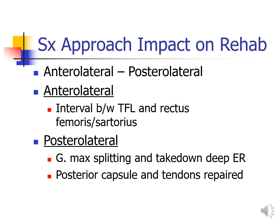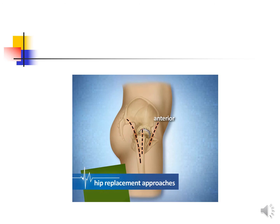With the posterolateral approach, after splitting the gluteus maximus, the deep external rotators are taken down. We need to be concerned about active external rotation since those muscles take about six weeks to heal. Because those muscles have been taken down, we've removed one barrier that protects the hip, making posterior dislocations a concern. Posteriorly, we're cutting through the gluteus maximus and the deep external rotators to access the hip joint capsule. Anteriorly, the incision goes through the interval between the TFL and the sartorius/rectus complex.